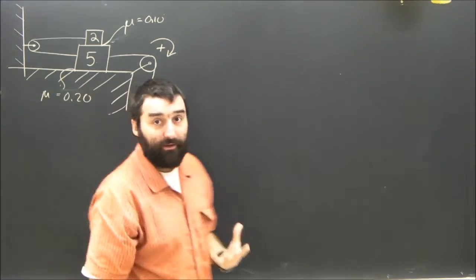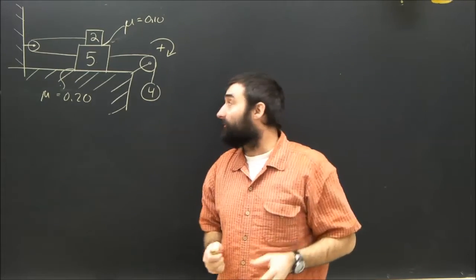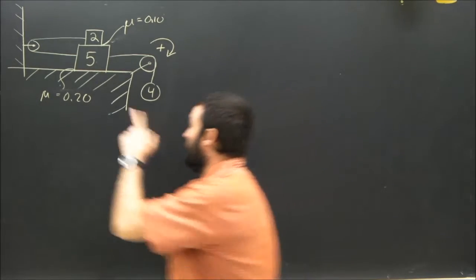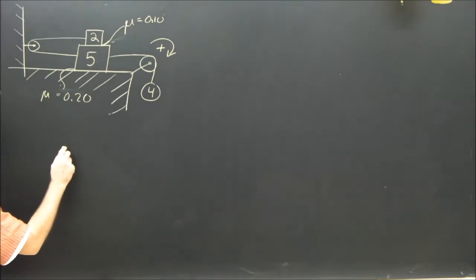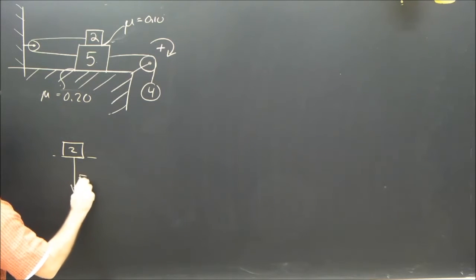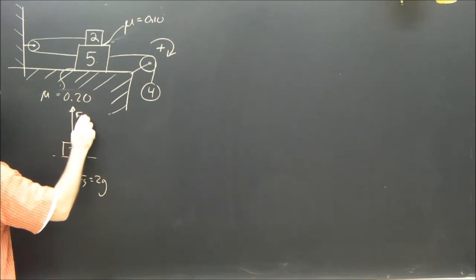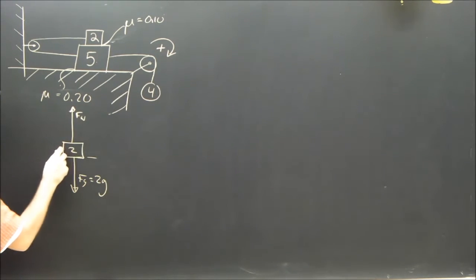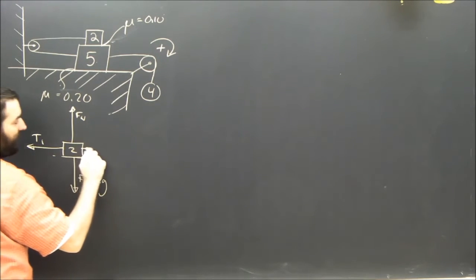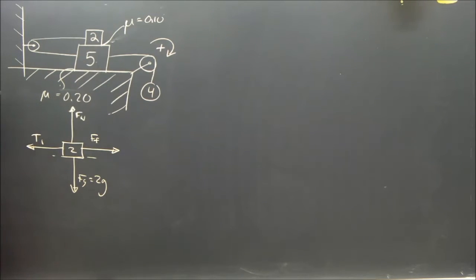When you're a bit better at these problems you'll see there's a shortcut, but I'm going to do it the way I teach it: draw a free body diagram of each object separately. The two kilogram object has a force of gravity of 2g, a normal force pushing up, a tension to the left which I'll call T1, and friction fighting it — that's the friction between the two and the five kilogram objects.